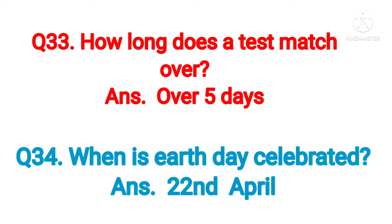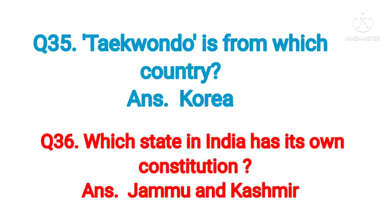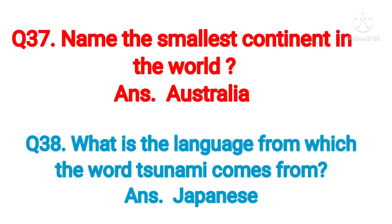Question number thirty-four: when is Earth Day celebrated? Answer: 22nd April. Question number thirty-five: Taekwondo is from which country? Answer: Korea. Question number thirty-six: which state in India has its own constitution? Answer: Jammu and Kashmir.